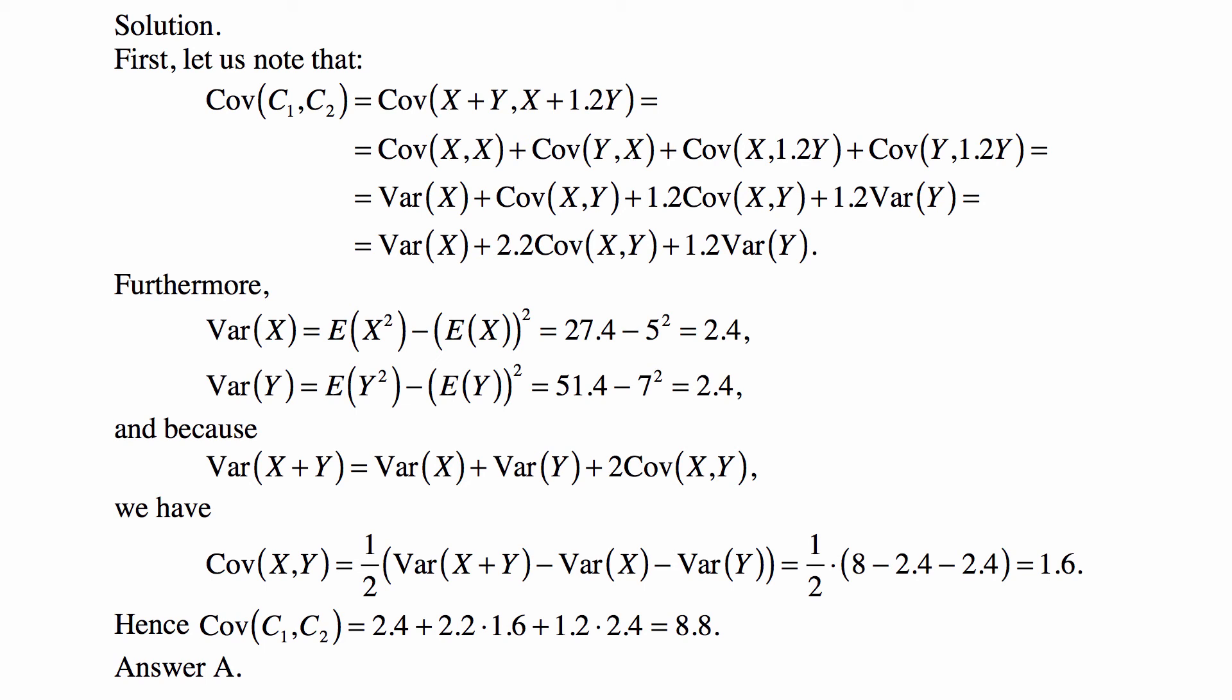And because the variance of X + Y is the variance of X plus variance of Y plus two times Cov(X, Y), which is a very important formula and you must remember it for the test, we have that Cov(X, Y) equals Var(X + Y) minus Var(X) minus Var(Y), the whole thing divided by 2. So we plug in the numbers and that means the covariance of X, Y is 1.6.